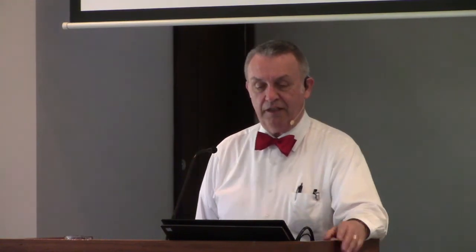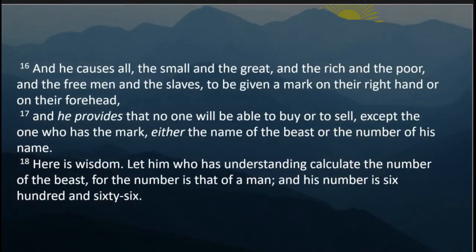The last section of chapter 13: the false prophet causes all — the small and the great, the rich and the poor, the free men and the slaves — to be given a mark on their right hand or on their forehead. No one will be able to buy or sell except the one who has the mark, either the name of the beast or the number of his name. Here is wisdom: let him who has understanding calculate the number of the beast, for the number is that of a man, and his number is 666.